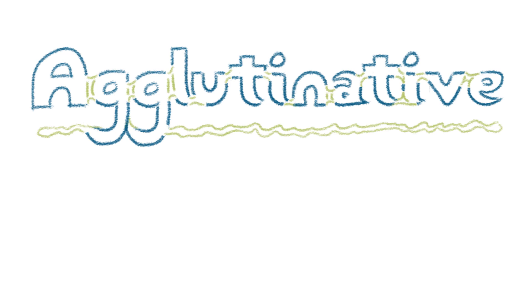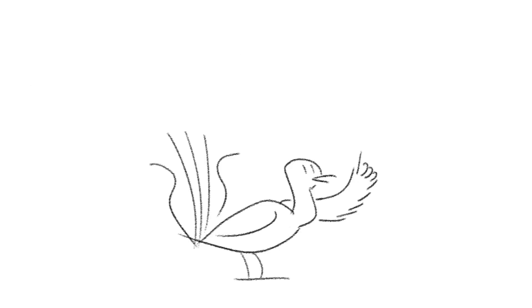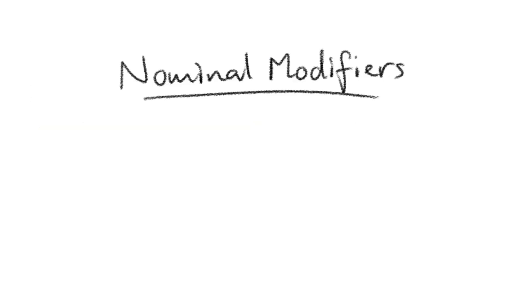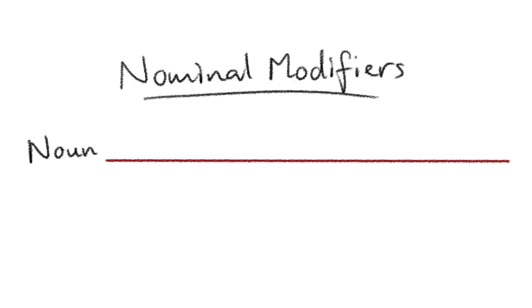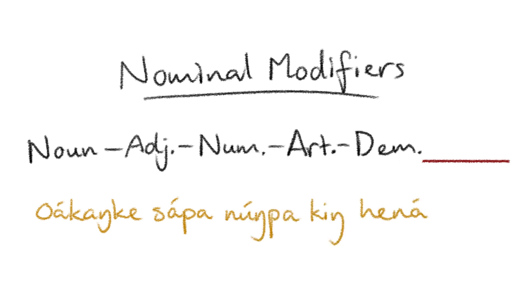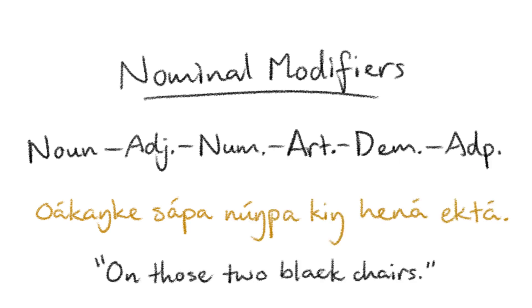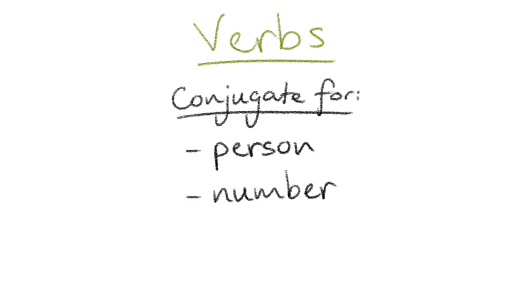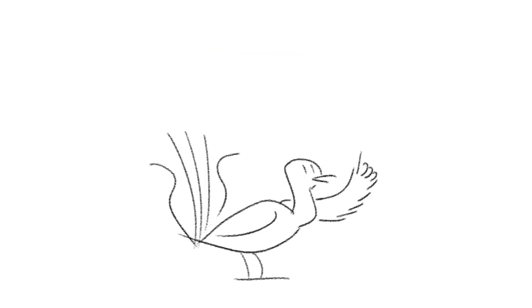Grammar. Lakota is an agglutinative and largely postpositional language, and the word order of Lakota is pretty much strictly SOV. Nominal modifiers always come after the noun they modify, following the order of noun, adjective, number, article, demonstrative, adposition — the exact opposite order to English. Verbs are only conjugated according to person and number, but that makes verb conjugation sound a lot simpler than it actually is. I'll try and go through it step by step.